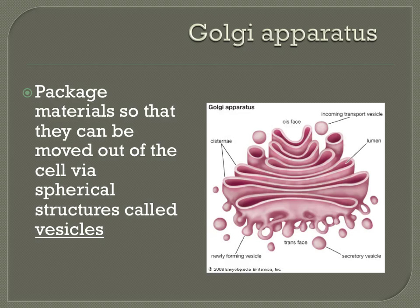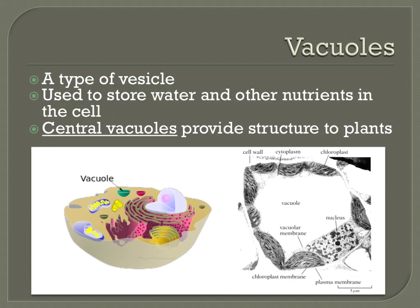These vesicles can contain many different types of substances. Examples of materials that could be contained in vesicles would be neurotransmitters — chemical messengers that allow neurons, which are brain cells, to communicate with one another — or hormones, which are also used for cell communication. There are many different types of vesicles that carry out different functions for the cell.